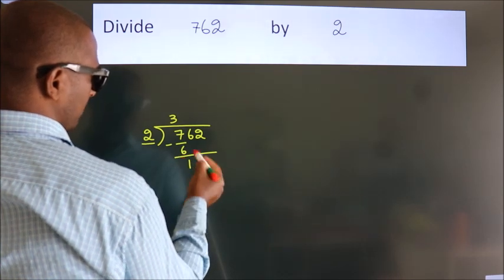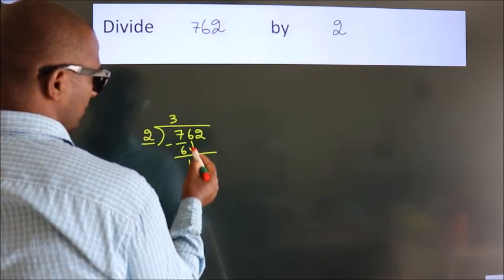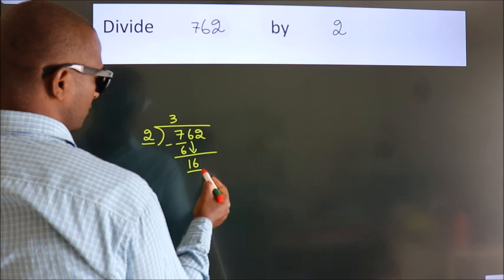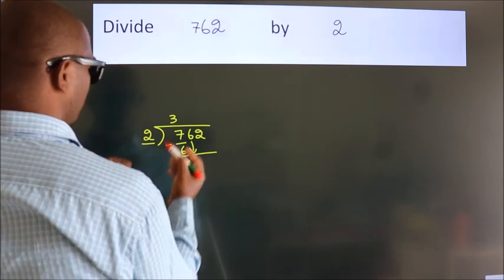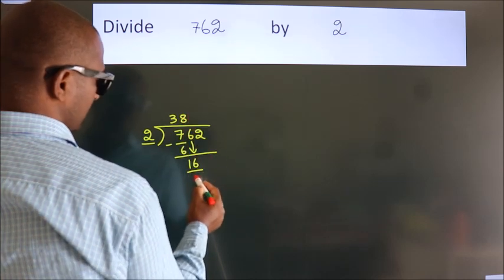After this, bring down the beside number. So, 6 down. So, 16. When do we get 16? In the 2 table: 2 times 8 equals 16.